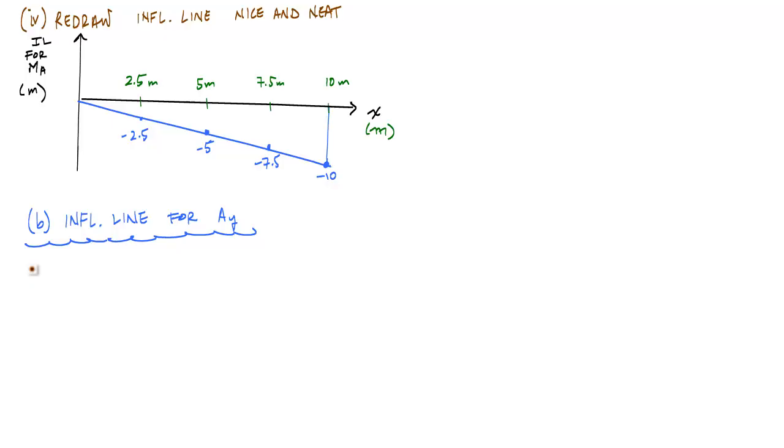And as we said before, the first thing we want to do is draw the structure undeformed with the action removed. And when we remove the vertical reaction at A, what we need is something that can roll and resist moment. So that means you have a roller with a block that doesn't allow rotation.